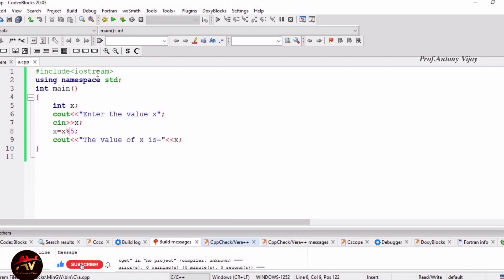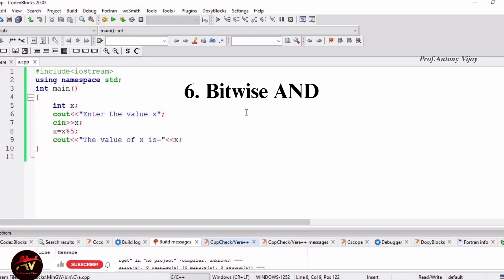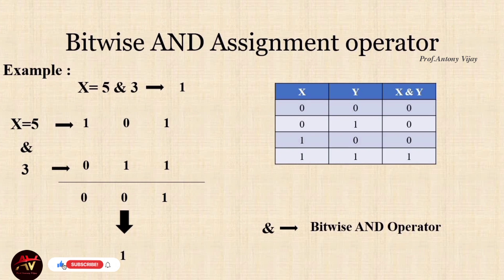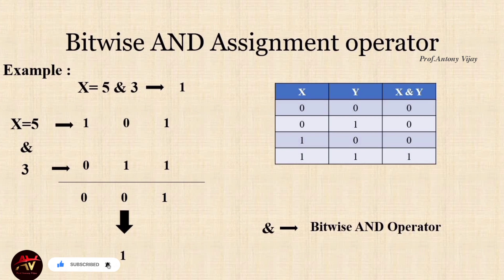The next 5 are very important, so we need to be careful. Next, we will talk about the bitwise AND assignment operator. In AND operation, if both X and Y values are 1, then the answer is 1. All other combinations are 0: 0 AND 0 is 0, 0 AND 1 is 0, 1 AND 0 is 0. Only 1 AND 1 is 1. This is the AND rule.